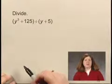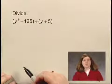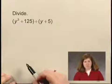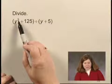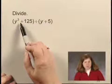In other words, if there is a y cubed term, is there also a y squared term and a y term and a constant term? In this case, there isn't. There's a y cubed term, but there's no y squared term or y term.